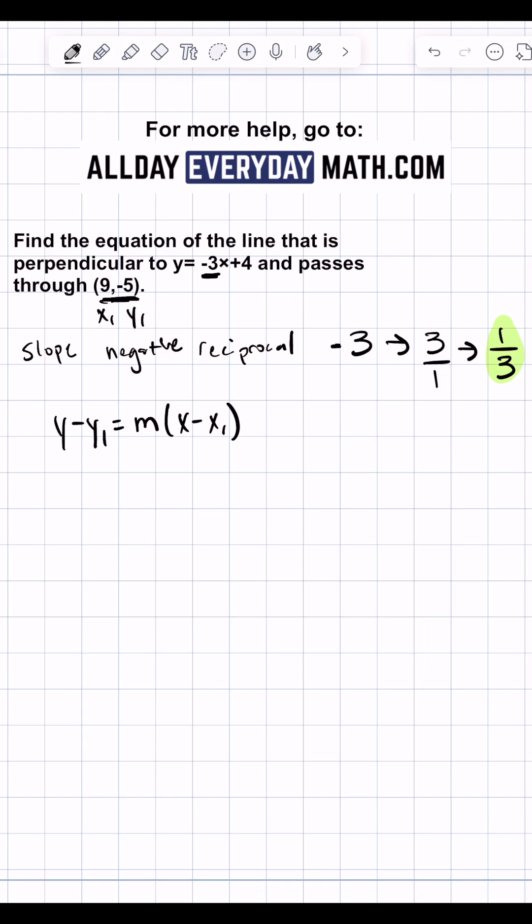So we have y minus negative 5 equals our slope, which is one third, times x minus x1, where x1 is 9. And now we can simplify.